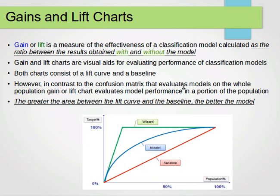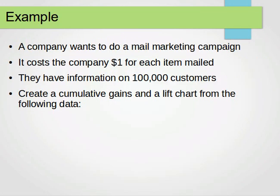Unlike the confusion matrix, which evaluates models on the whole population, the gains or lift charts evaluate the performance of the model on a proportion of the population. As mentioned, the greater the area between the lift curve and the baseline, the better the model — we want the blue curve to be as far as possible from the baseline, the red line.